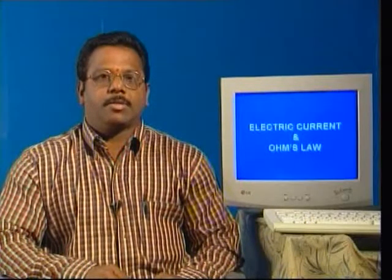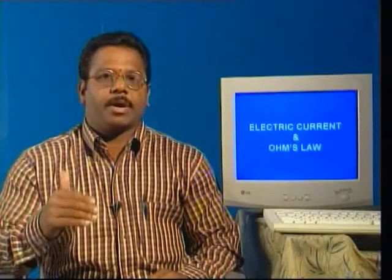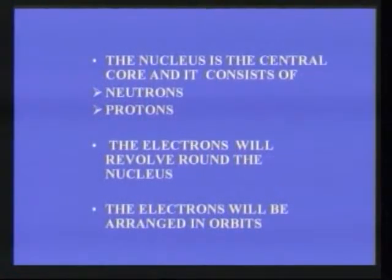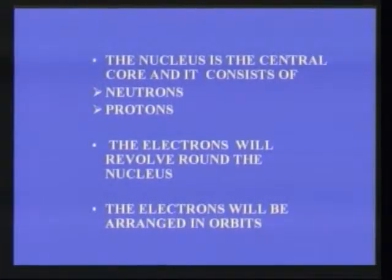All matter, whether it is a solid, liquid or gas, consists of minute particles called molecules. The molecules are again made up of atoms. The atom consists of protons, neutrons and electrons. The protons and neutrons are situated in the nucleus and the electrons revolve around the nucleus. The structure of an atom is more or less similar to our solar system. The nucleus is the central core and it consists of neutrons and protons, while the electrons revolve around the nucleus arranged in orbits.